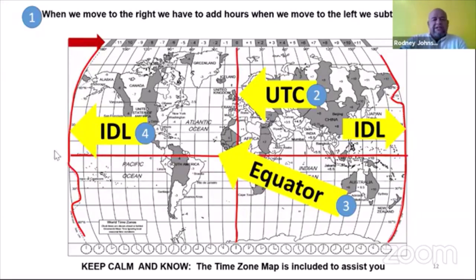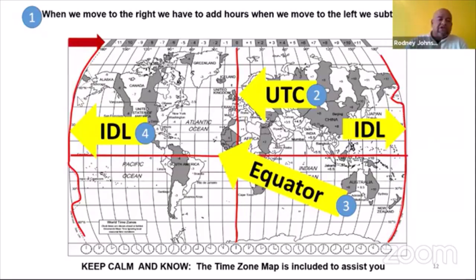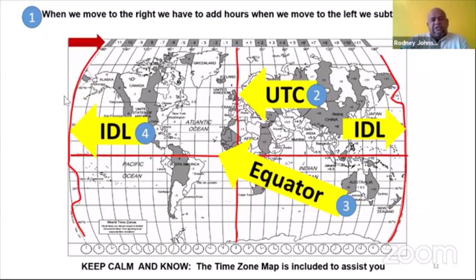Another important meridian is the International Date Line. On this map you see two International Date Lines, but in fact this is the same line — remember the earth is round. If you put this map on a flat surface, that line on one side is exactly the same line on the other side. For tourism you need to know: if you cross this line, you either gain a day or you lose a day.